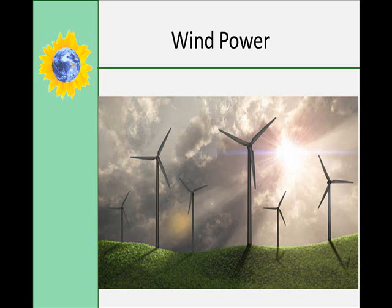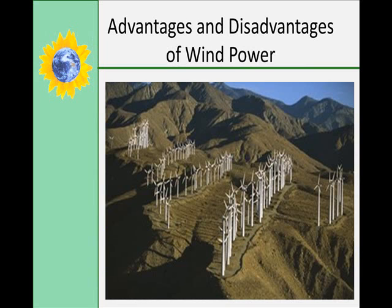Wind turbines are basically giant aircraft propeller blades that turn in the moving air and power an electric generator. The wind turbine is essentially the opposite of a fan: instead of using electricity to make wind, wind turbines use wind to make electricity. Wind energy is a free renewable resource — no matter how much is used today, there will still be the same supply in the future. Wind plants emit no air pollutants or greenhouse gases. In 1990, California's wind power plants offset emissions of more than 2.5 billion pounds of carbon dioxide and 15 million pounds of other pollutants — equivalent to the air quality benefit of 90 to 175 million trees.